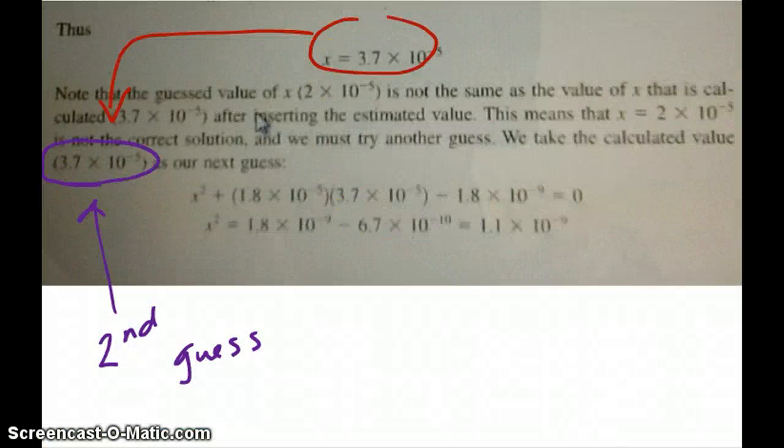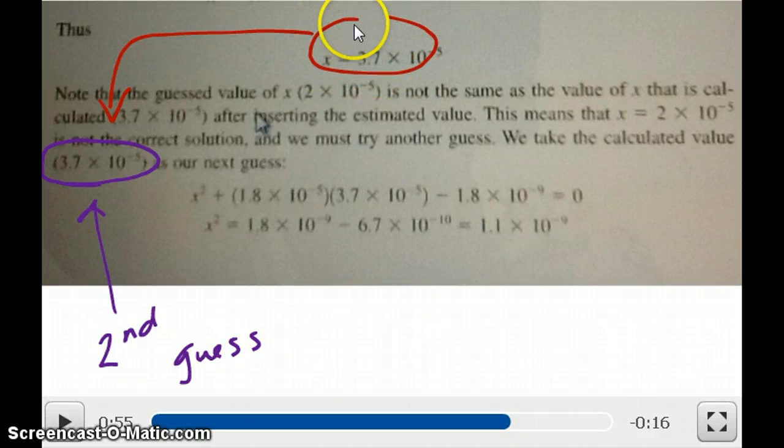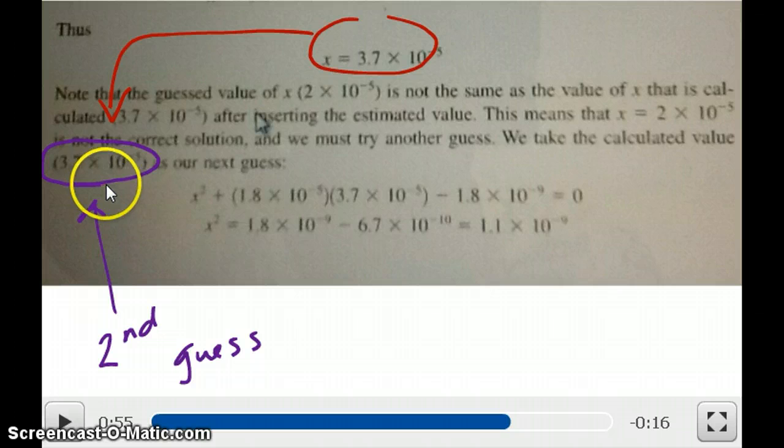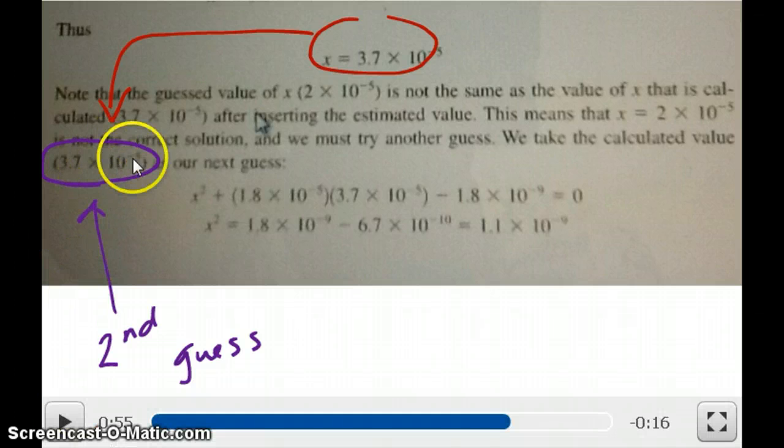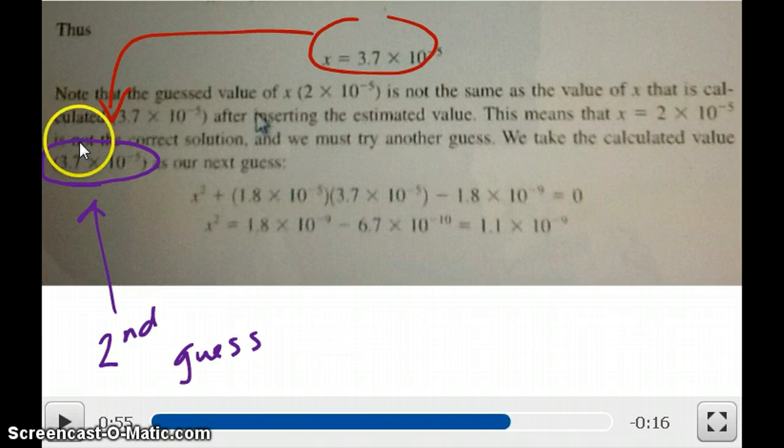Here's the continuation of our previous problem. So this is what we found as our first solution in step one when we guess, we got this number as our solution. Now this becomes our input for the second guess, so in other words, we take the solution from step one and use it as a guess for the second step. And then what we do is we just take that guess value and again substitute it back into the original equation, x squared plus 1.8 times 10 to the minus 5x, but the x now is this number, minus 1.8 times 10 to the minus 9 equals 0, and we solve for x again.